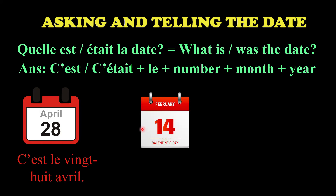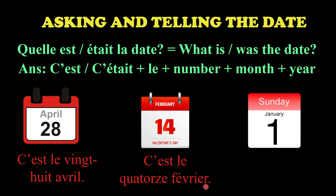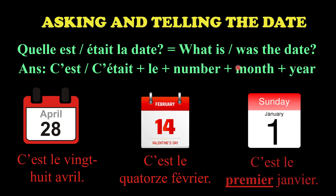Look at the next example: February 14th would be 'c'est le 14 février.' Now there is one exception you need to be very aware of - the number one. Whenever you're talking about the first of any month, you do not use the cardinal number. You will not say 'c'est le 1 janvier.' Instead, and this is only for the number one, only for the first of every month, you use the ordinal number: 'c'est le premier janvier', 'c'est le premier février', and so on.